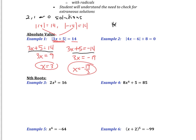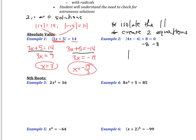In example two, the first thing you always have to do is isolate the absolute value before creating two equations. I'm going to isolate the absolute value by subtracting 8 from both sides, and I get the absolute value of 4x minus 6 is equal to negative 8. Since absolute value represents distance, my distance can never equal a negative number, so there is going to be no solution here. That's one of the key reasons why you always want to isolate the absolute value first.